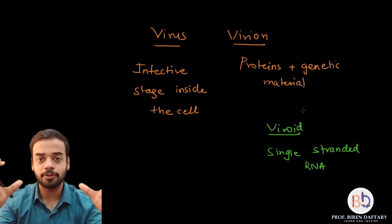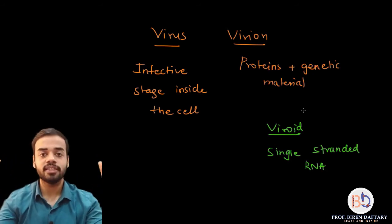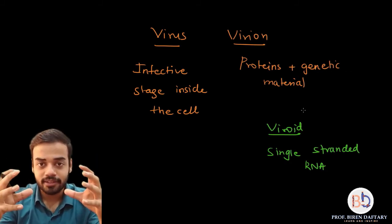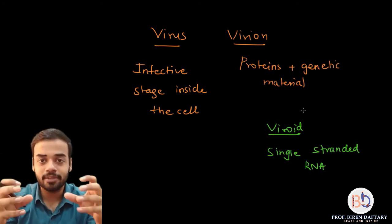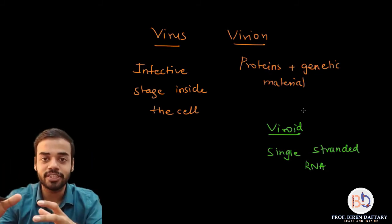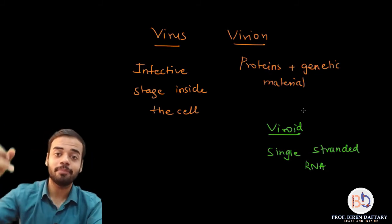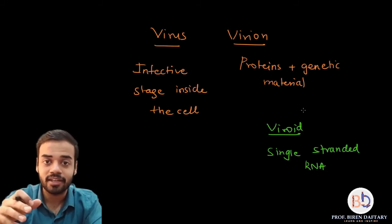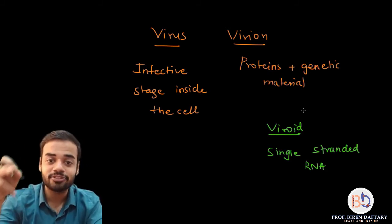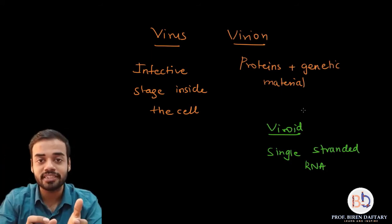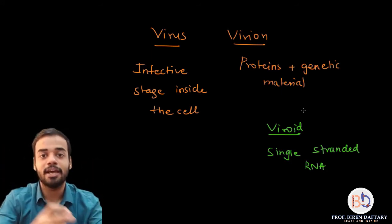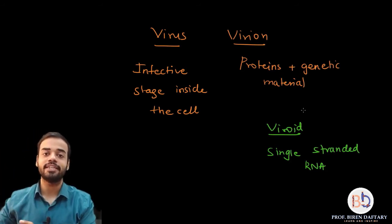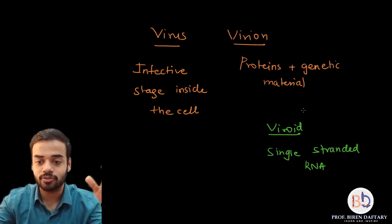To take the example of a bacteriophage: a bacteriophage having its capsule and genetic material — that complete structure is called a virion. Whereas when that bacteriophage injects its DNA inside E. coli, that injected DNA is called the virus. So: the infective stage is called virus, the non-infective stage is called virion, and viroid is a separate entity with no proteins.